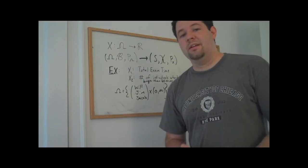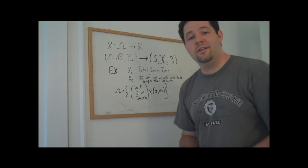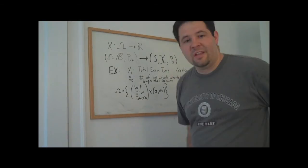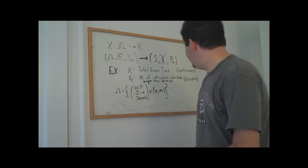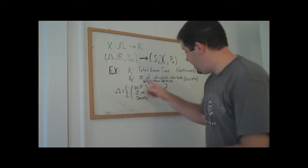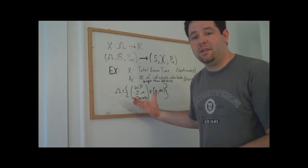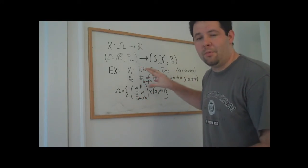The first one, which was on a continuum, could take on a continuum of values, we're going to call a continuous random variable. This distinction between continuous and discrete random variables, we can see it came from the same experiments. It's not going to be something fundamental about the experiment. It's something fundamental about the random variable.